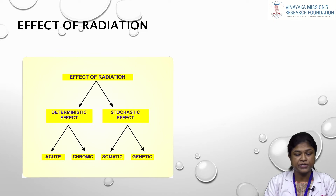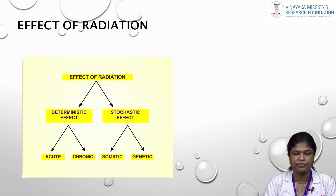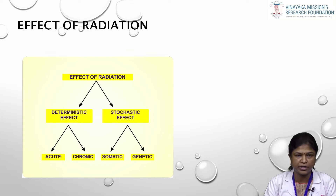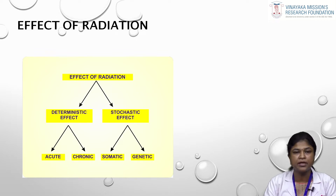The effects of radiation are broadly classified into two: the deterministic effect and the stochastic effect. Deterministic effect can produce an acute or a chronic change, whereas stochastic effect can produce a somatic or a genetic effect depending upon the cell being affected.